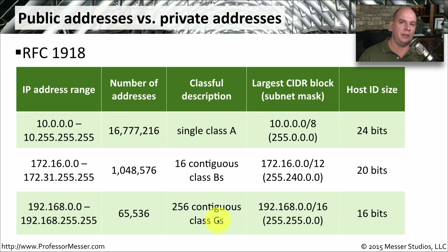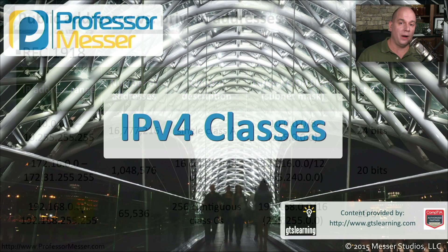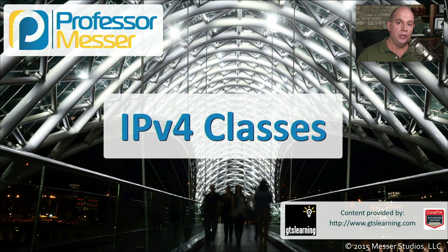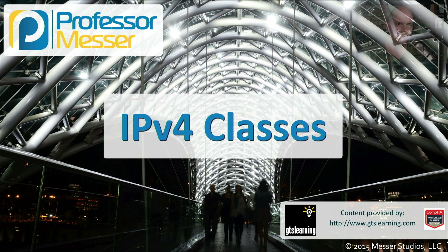The 192.168.0.0 network is commonly subnetted into class C subnets, giving you 256 networks that you could use. Now that you know the IP address ranges for an RFC 1918 or private address, you should be able to look at any IP address and know instantly whether that is a private address or a public address.